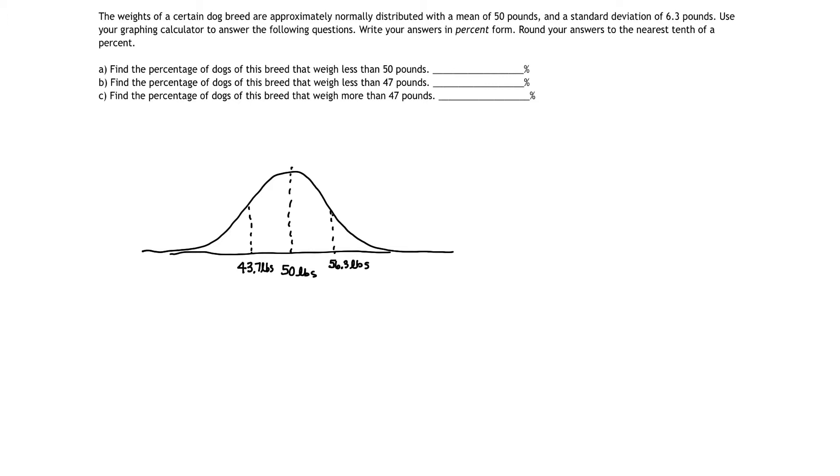So let's look at question A. Question A asks us to find the percentage of dogs that weigh less than 50 pounds. If we look at our standard normal deviation, we notice 50 pounds is actually our mean right here in the middle. And we are looking for the percentage of dogs that weigh less than 50 pounds. In other words, we're looking for the area under the curve to the left of 50 pounds.